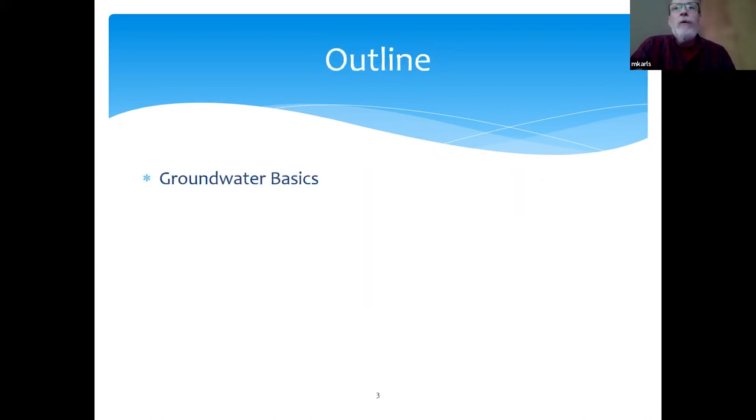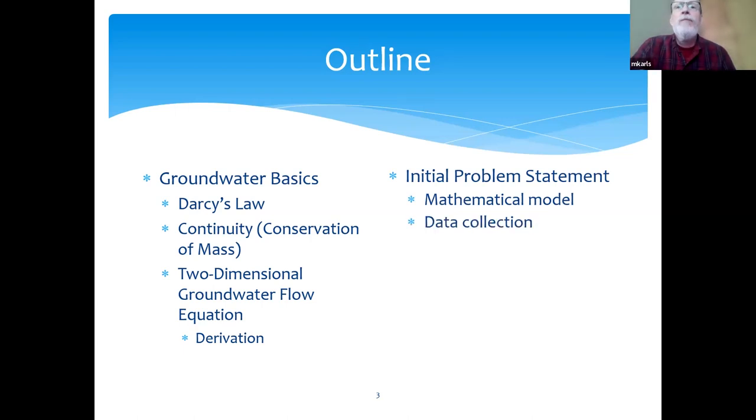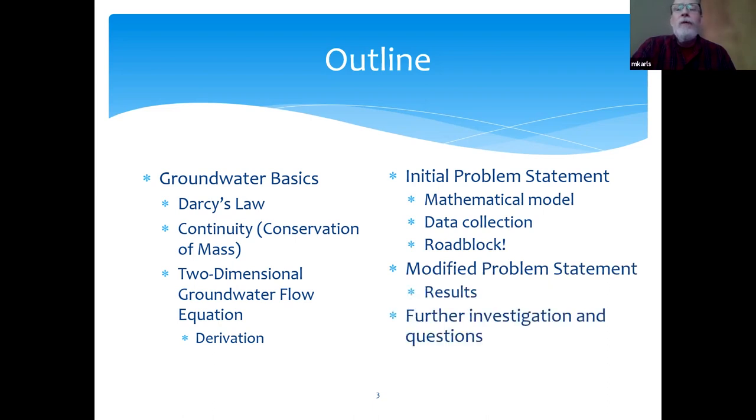So just an outline of what we're going to talk about. First we're going to look at some groundwater basics with Darcy's law, the idea of continuity or conservation of mass, and then we'll look at the two-dimensional groundwater flow equation. We're actually going to derive this equation and then I'll give you an initial problem statement, look at the mathematical solution and how we collect the data for this, then we'll look at the roadblock we ran into. Then I'll look at the amended problem statement, the results of this problem, and then we'll look at further investigation and some questions that have come up and a conclusion.